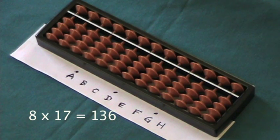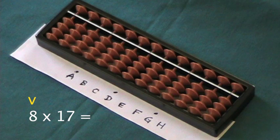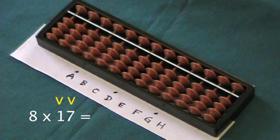8 times 17 equals 136. This is example 4 in Kojima, page 57. 8 is the one-digit multiplicand, 17 is the two-digit multiplier.